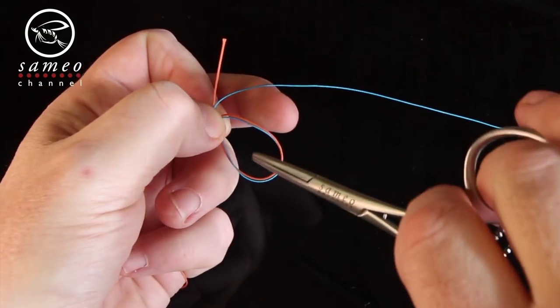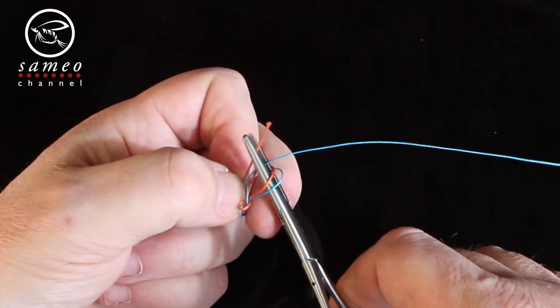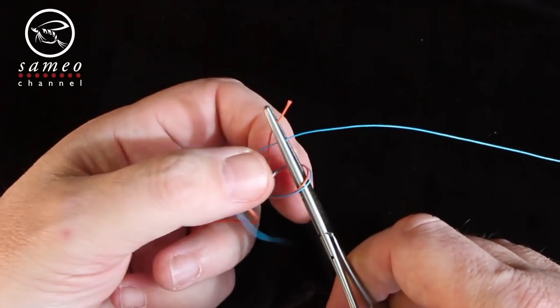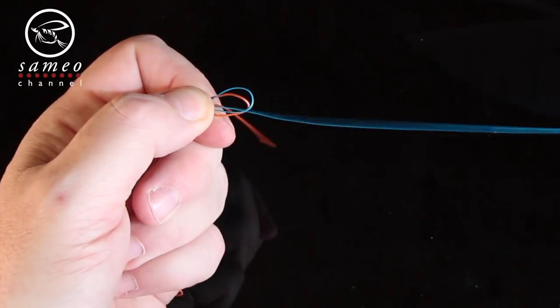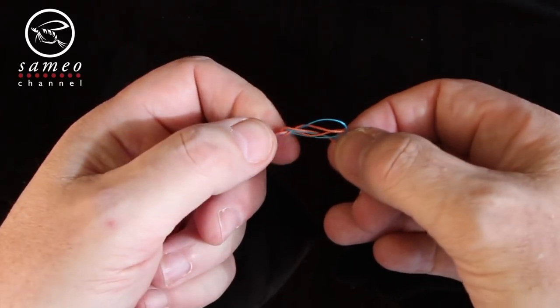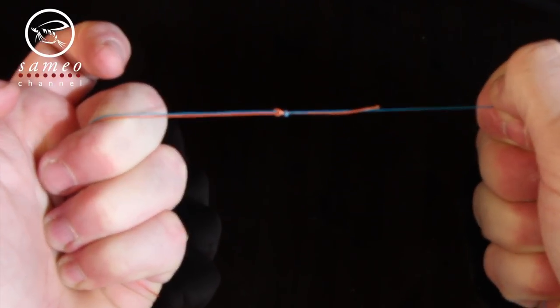Put your forceps through the loop and make two turns. Open the forceps to fetch both ends. Use the forceps to pull through all the way. You wet and tighten and use the nippers to trim the excess.